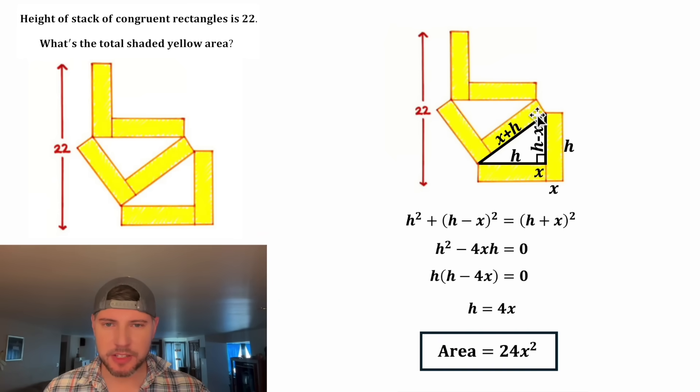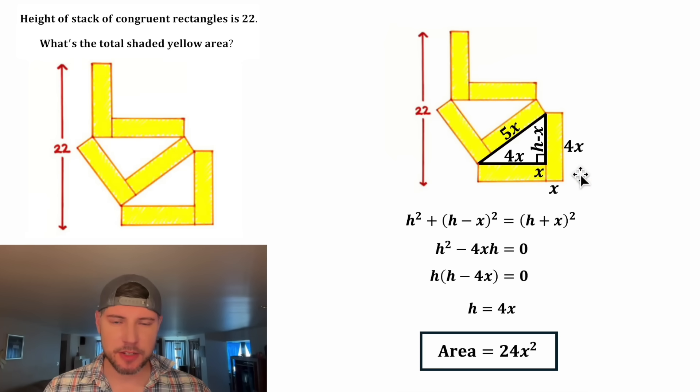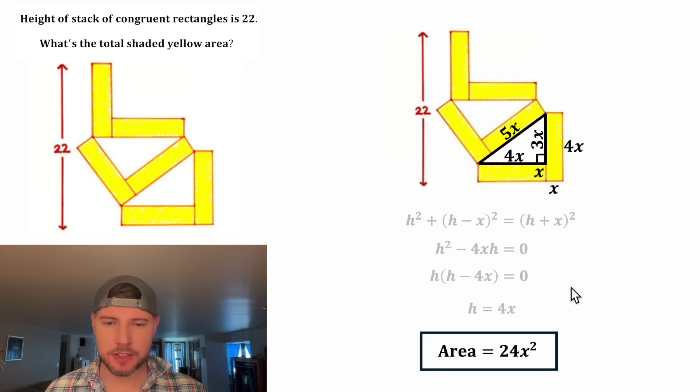So then what are we going to do next? We can substitute for these H's as well. This H will be 4X, and X plus 4X is 5X. And then this H is 4X, and this H is also 4X. And then for this part of the triangle, we have 4X minus X, which is 3X. And now we got rid of all the H's. So we're not going to need any of this anymore.